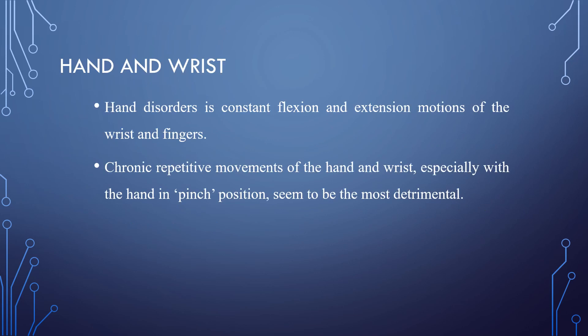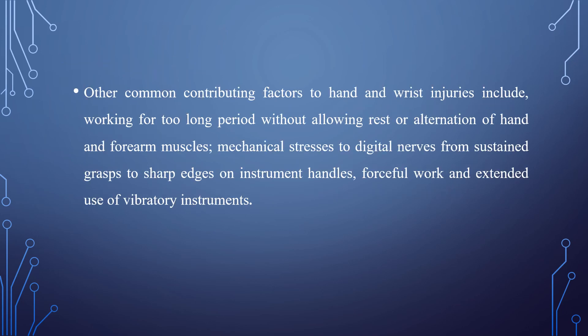Hand and wrist disorders are also a type of musculoskeletal disorder. Hand disorders involve constant flexion and extension motions of the wrist and fingers. Chronic repetitive movements of the hand and wrist, especially when the hand is in a pinch position, seem to be the most detrimental problem in hand and wrist injuries. Other common contributing factors include working for too long a period without allowing rest or alternation of the hand and forearm muscles, mechanical stresses to digital nodes from sustained grasps on sharp objects or instrument handles, forceful work and extended use of vibratory instruments.